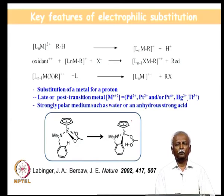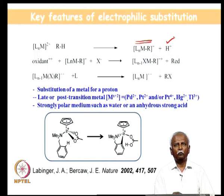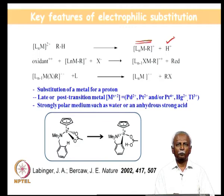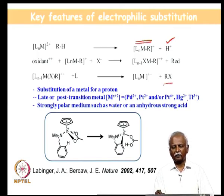Now let us take a look at the key features of this electrophilic substitution. The key feature is the formation of the metal-carbon bond in the very first step, and release of H⁺ is the most important and key step in this whole process. In the second step you need an oxidant — the oxidant could be charged or neutral — but nevertheless it has to remove two electrons and probably provide the X⁻ group, so that R-X is generated at the end of the reaction.